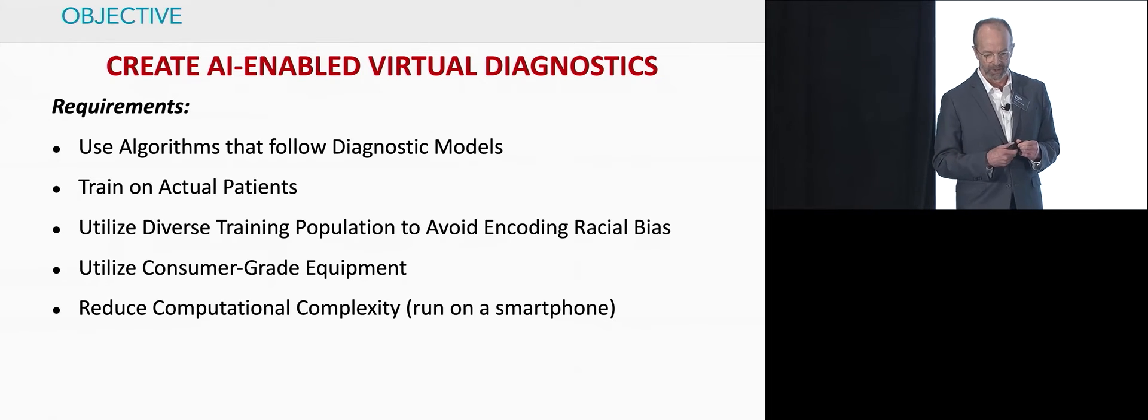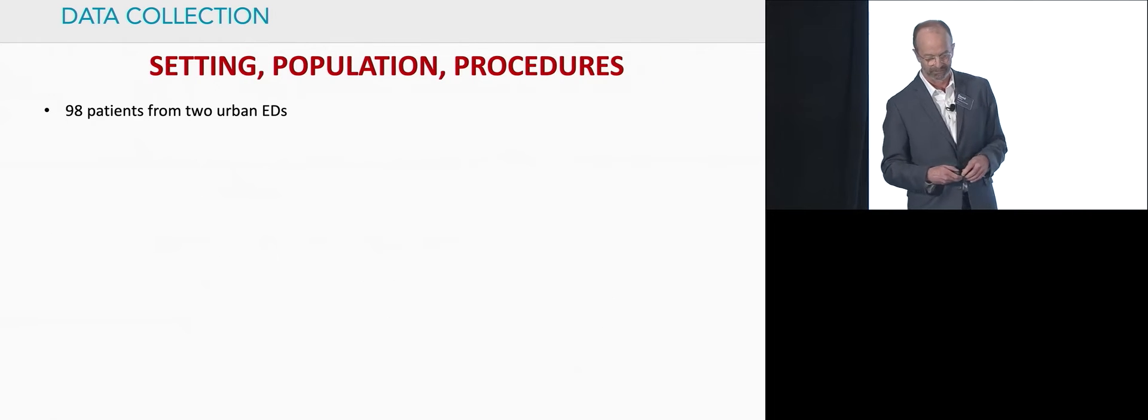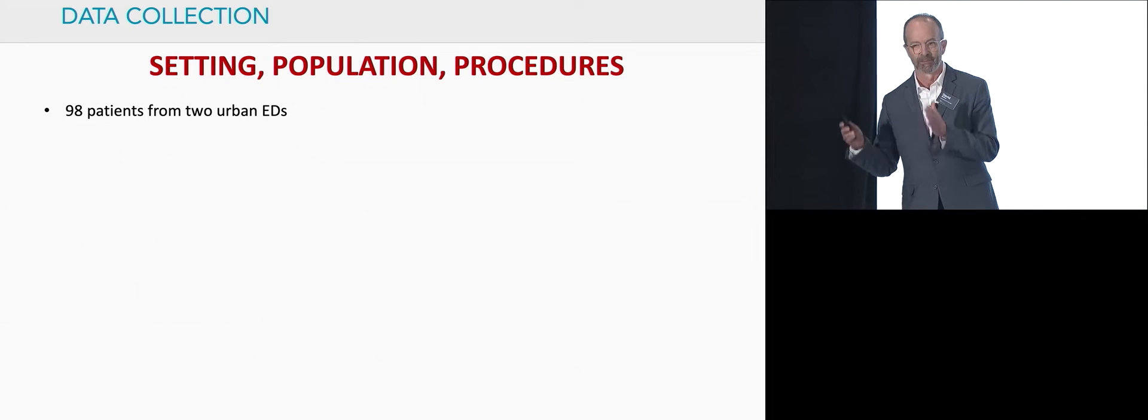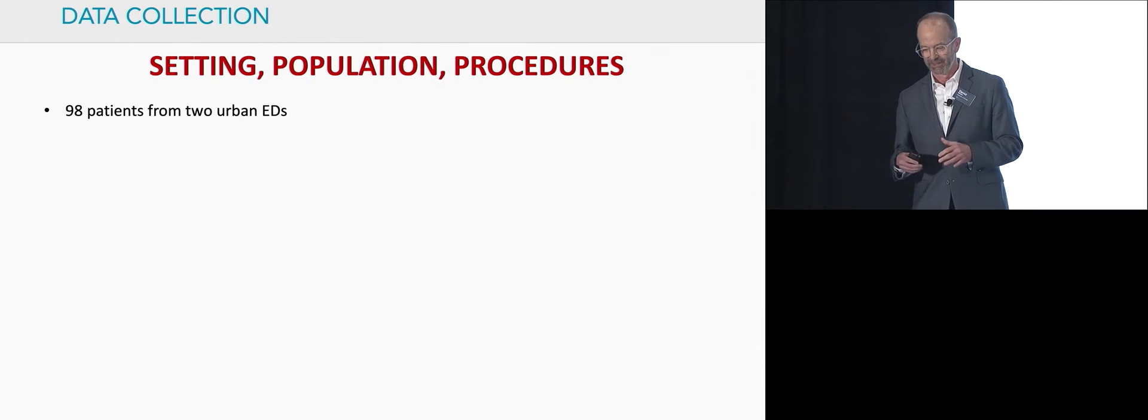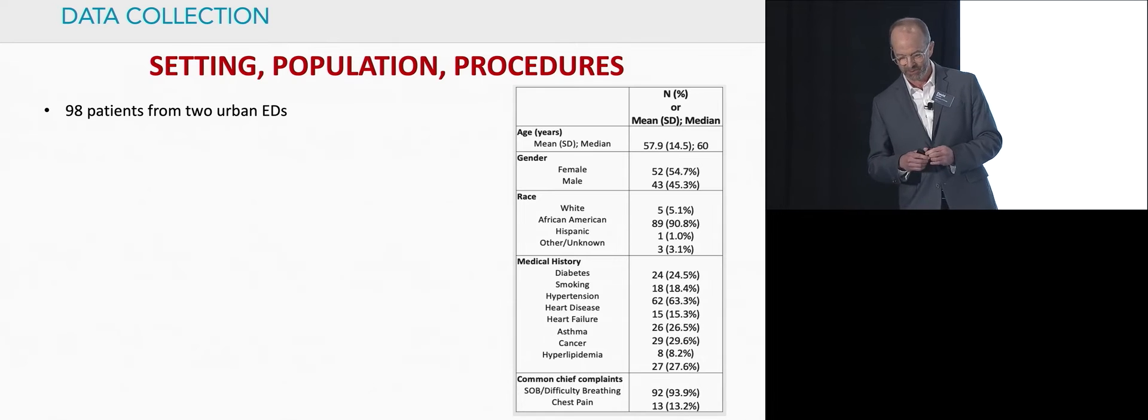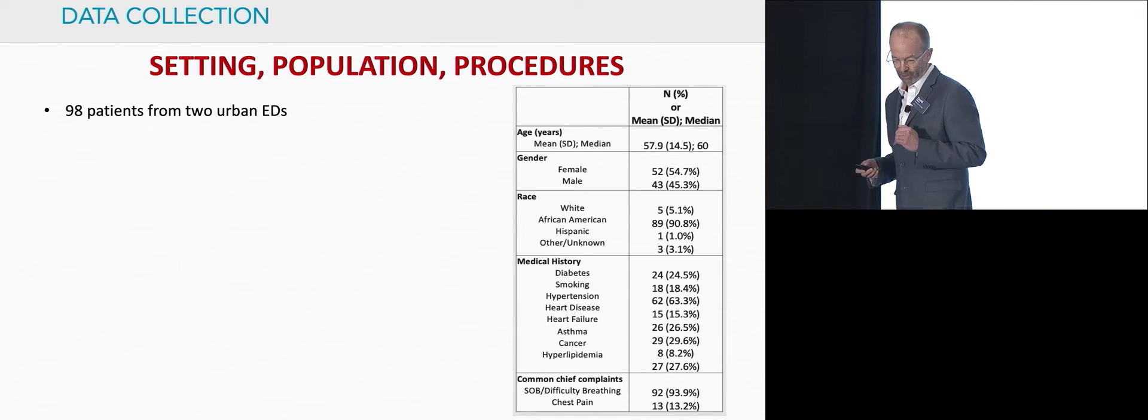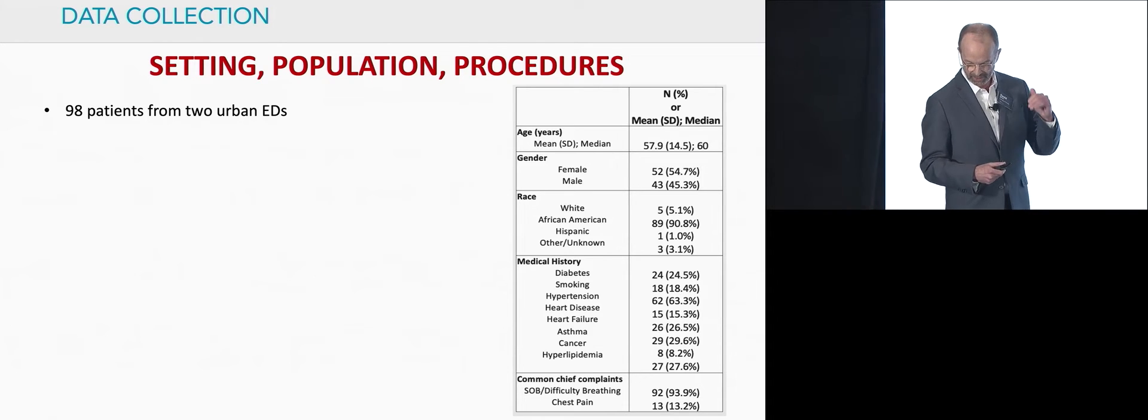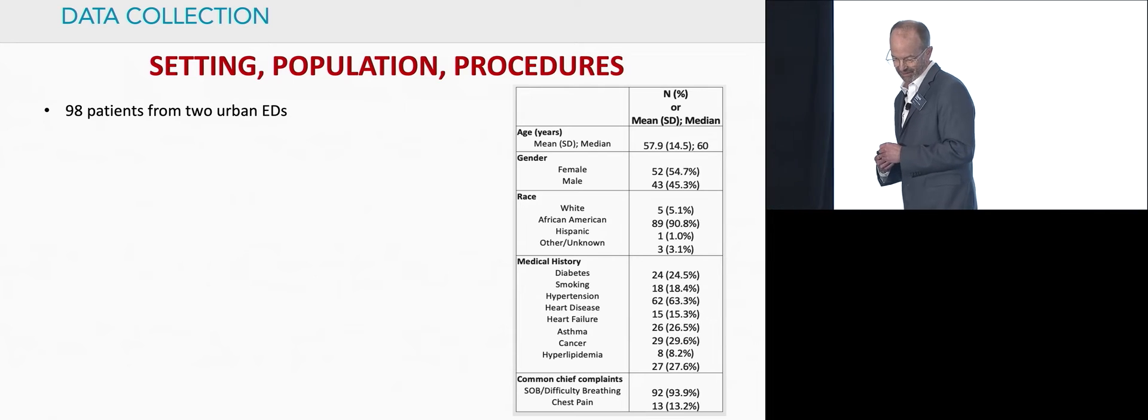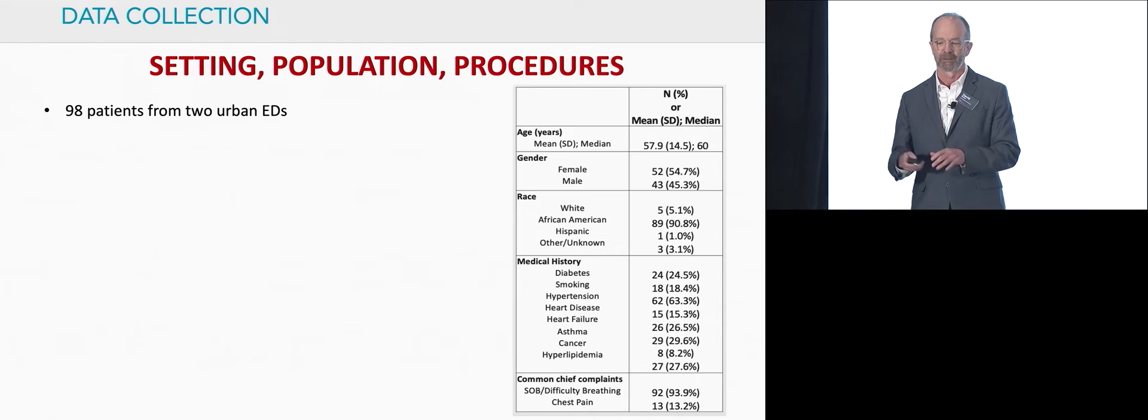Here's what we did. We acquired data from close to 100 patients in two urban emergency departments in Chicago. This is the traditional table one from a clinical study. This was a reasonably sick group. The group was middle aged, largely African American. 25% had diabetes, many smoked, 63% had hypertension, 15% had heart disease. It's a very sick group of patients, and this is unique within this computational space.